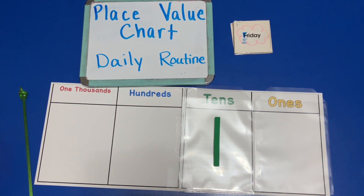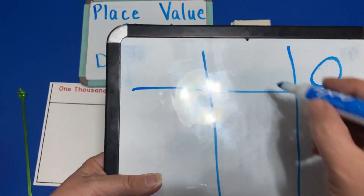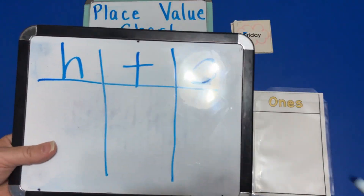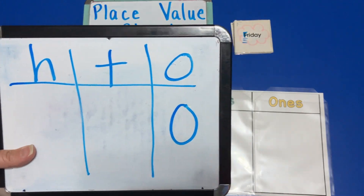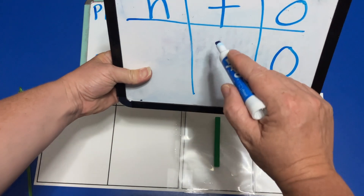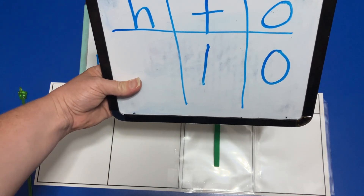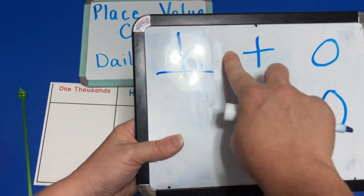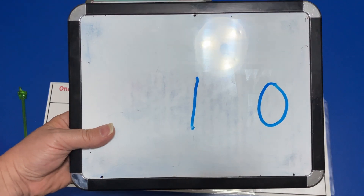So if we have a place value chart with ones over here, tens in the middle, hundreds over here — right now you can see that we have zero things in the ones place, and you can see that we have one group of ten in the tens place. Well, if we have one group of ten and zero ones, what number does that make?